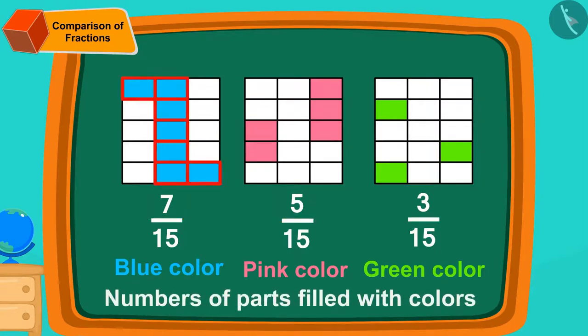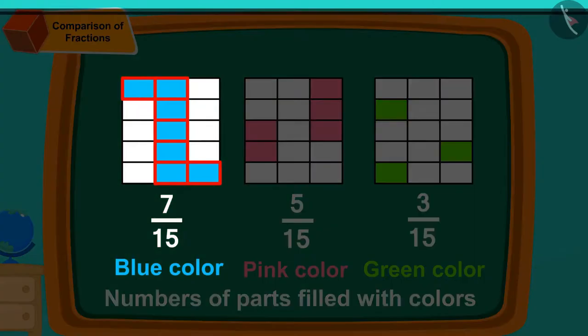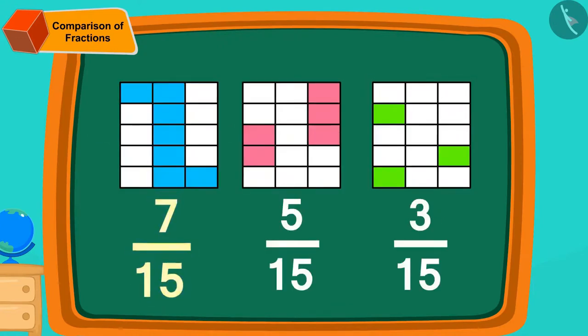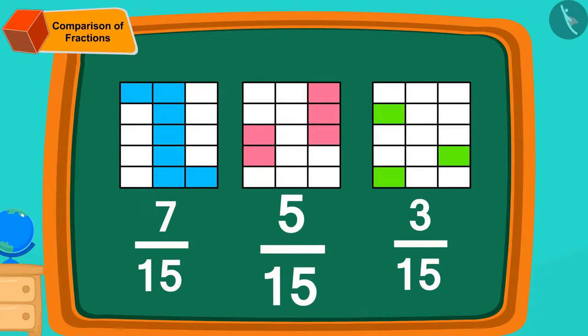Number of blue colored parts here, 7, is the highest. Hence, the biggest part of the design, 7/15, is filled with blue color. So, the fraction 7/15 is bigger than both of these fractions, 5/15 and 3/15.